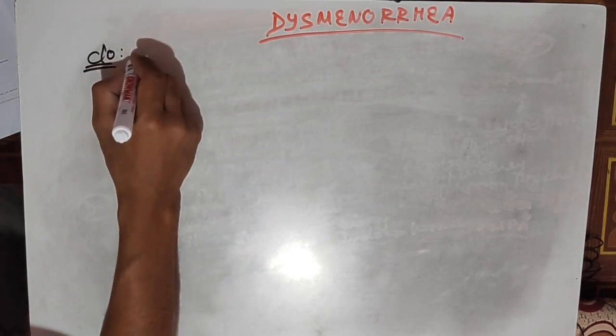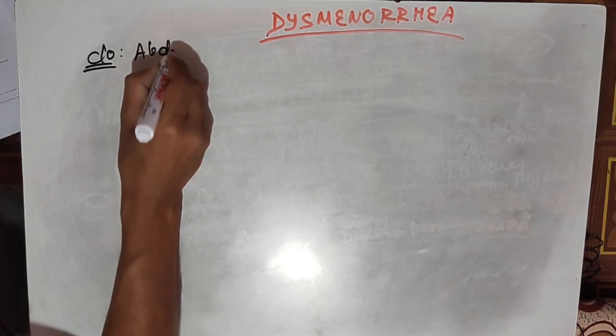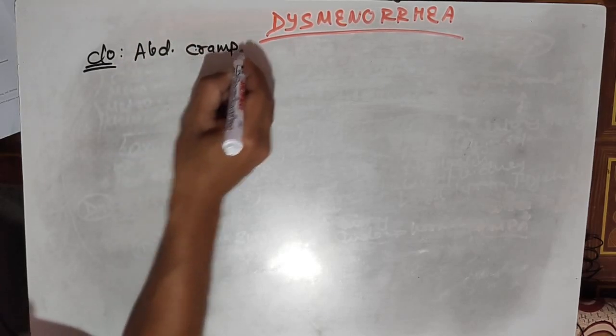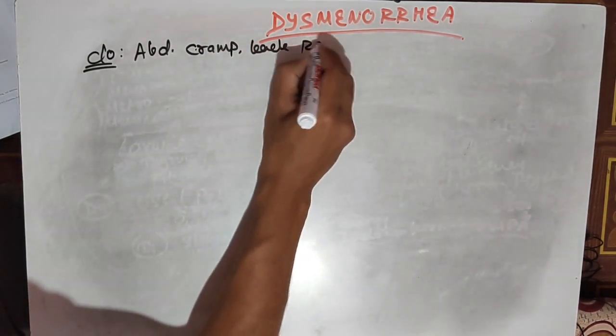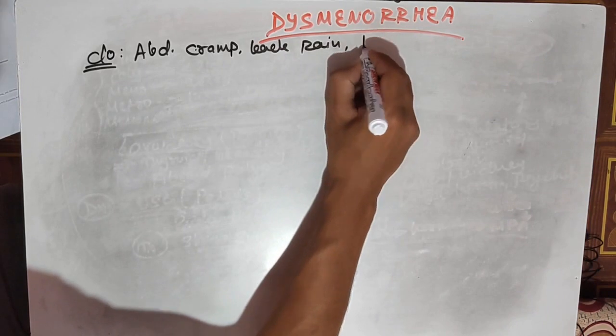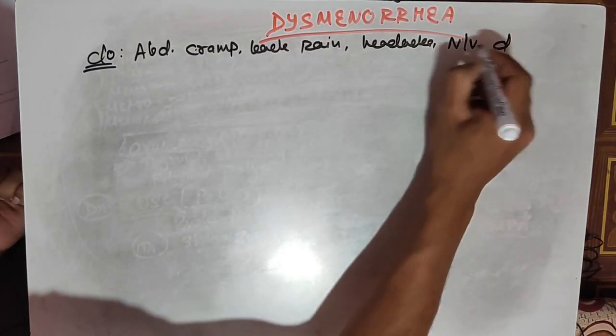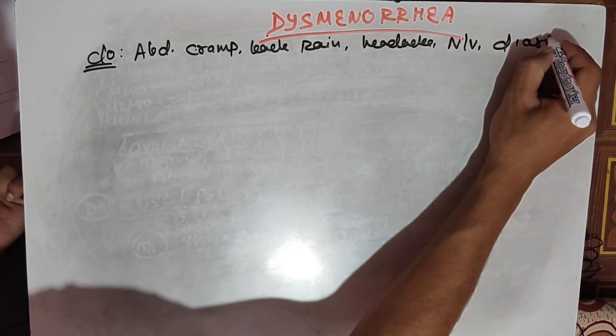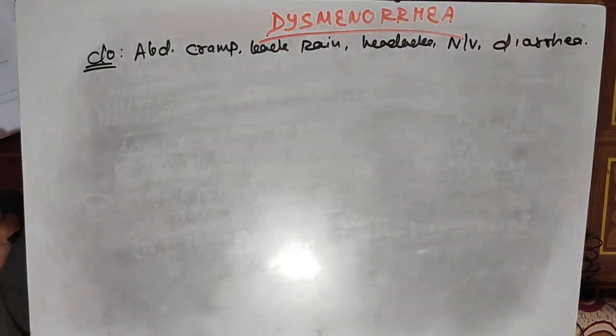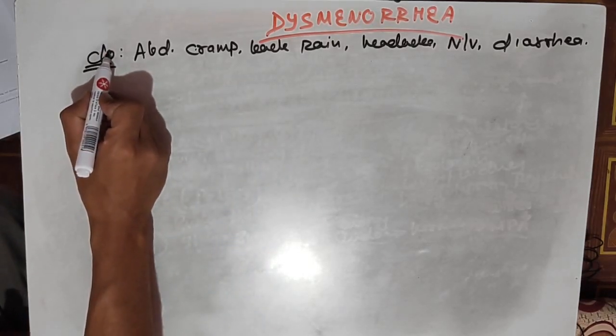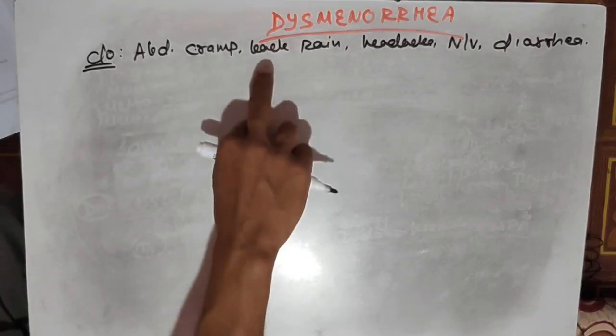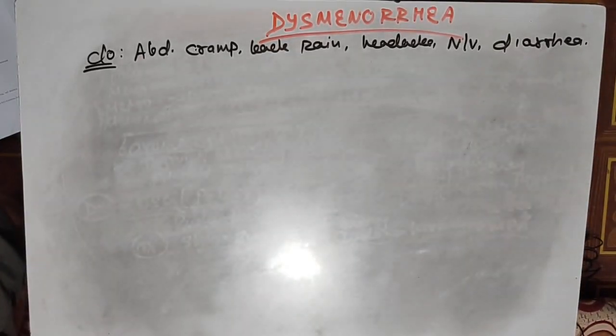During menstruation with dysmenorrhea, there can be abdominal cramps, back pain, headache, nausea, vomiting, or sometimes diarrhea. These complaints occur during the menstrual cycle and coincide with the onset.